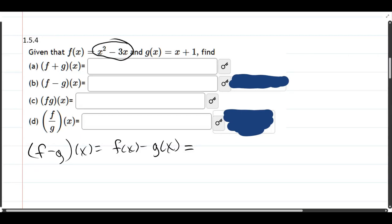So f of x is just x squared minus 3x. Now g is x plus 1. So it's minus x plus 1. But it's minus the whole quantity x plus 1. If you want, you could wrap f of x in parentheses just so you could see where it came from.